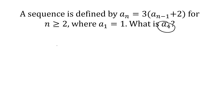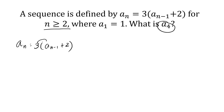Since our n is greater than or equal to 2, we are going to start substituting 2 into our original equation. Let us first rewrite our equation. So a sub n is equal to 3 times a sub n minus 1 plus 2. We are going to distribute 3, so we have a sub n is equal to 3 times a sub n minus 1 plus 6.